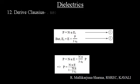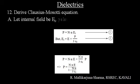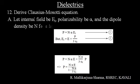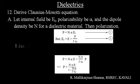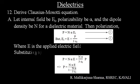Question number 12: Derive the Clausius-Mossotti equation. Answer: Let the internal field be E_I, polarizability be alpha, and the dipole density be N for a dielectric material. Then polarization P is equal to N alpha E_I. (Equation 1)